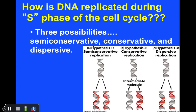Now let's turn attention to the mechanism by which DNA is replicated during the S phase of the cell cycle. At the time, there were three hypotheses. In the semi-conservative hypothesis, starting with the original piece of DNA, the two strands separate, each strand serving as a template for new DNA. Another possibility was the conservative model, where the original DNA is retained as two new copies are made. A third possibility was the dispersive model, where the original DNA ends up as large chunks interspersed with newly formed DNA in each of the two copies produced.